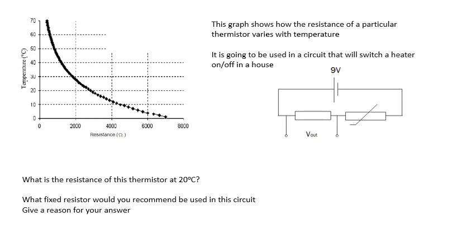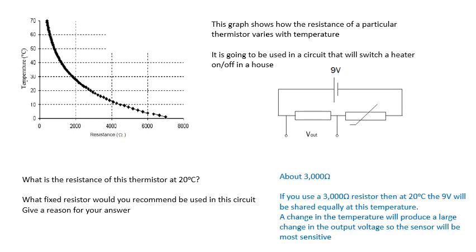Have a go at this question. I'll show you the answer in a couple of seconds. So what's the resistance of this thermistor at 20 degrees centigrade? Well, according to this graph, it's about 3000 ohms.